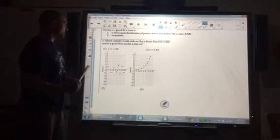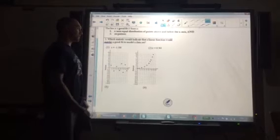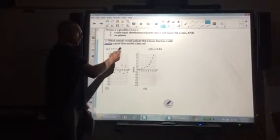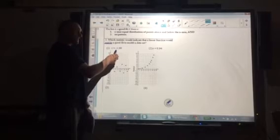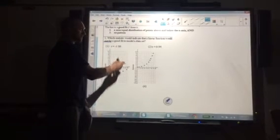The question asks, which statistic would indicate a linear function would not be a good fit? Number 1, r equals negative 1. That means it's a perfect negative correlation, so that would be a good fit.